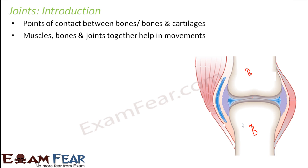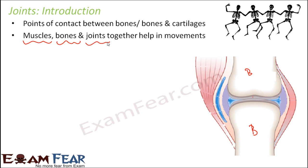Muscles, bones, and joints together help in movements. Everywhere in our body where movement is possible, we have a joint — two bones linked, or one bone linked to a cartilage. When you think of a scenario where people are dancing, different parts of the body are moving: the knee is bending, the arms are moving, fingers are moving, the neck is moving. At each of these points you have a joint, and these joints result in movement. However, joints alone cannot cause movement — bones, muscles, and joints all together help in movements.